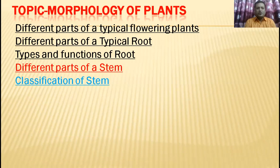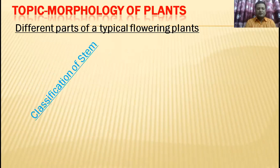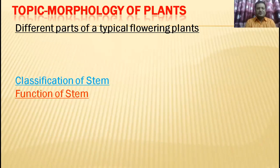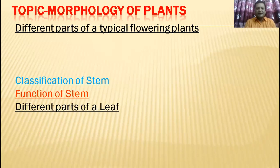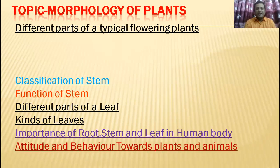Today's topics are: different parts of a typical flowering plant, different parts of a typical root, types and functions of root, different parts of a stem, classification of stem, functions of stem, different parts of a leaf, kinds of stems and kinds of leaves, importance of roots, stems and leaves in the human body, and finally, attitude and behavior towards plants and animals.